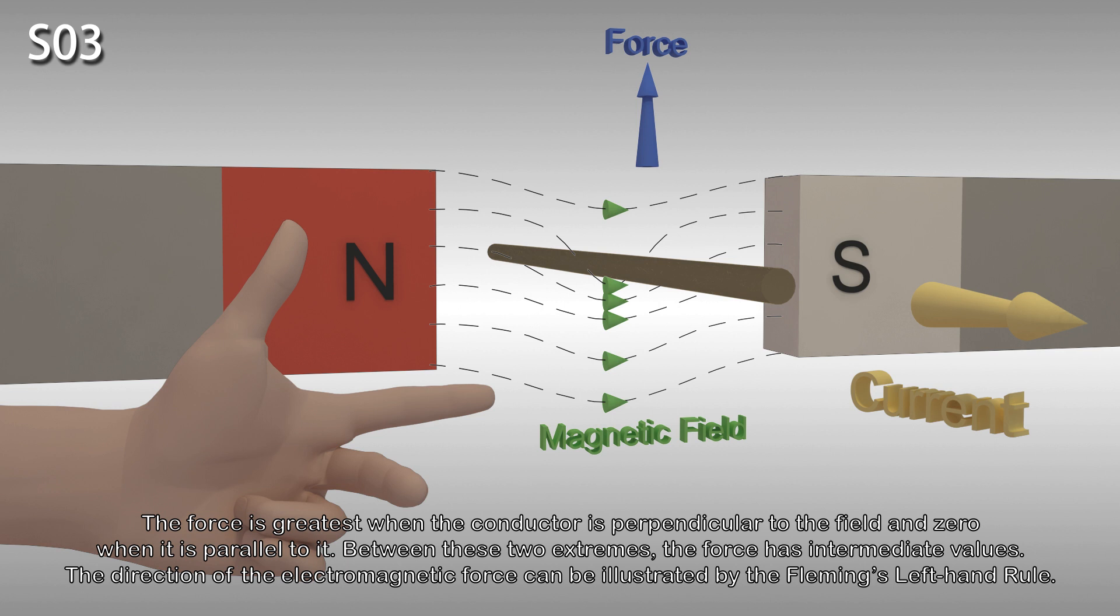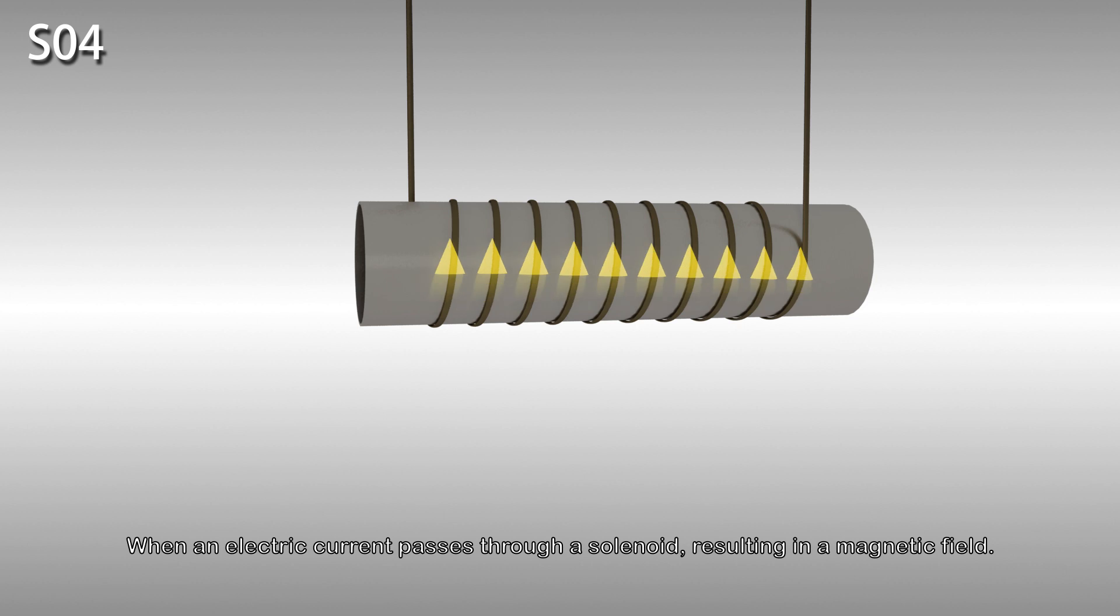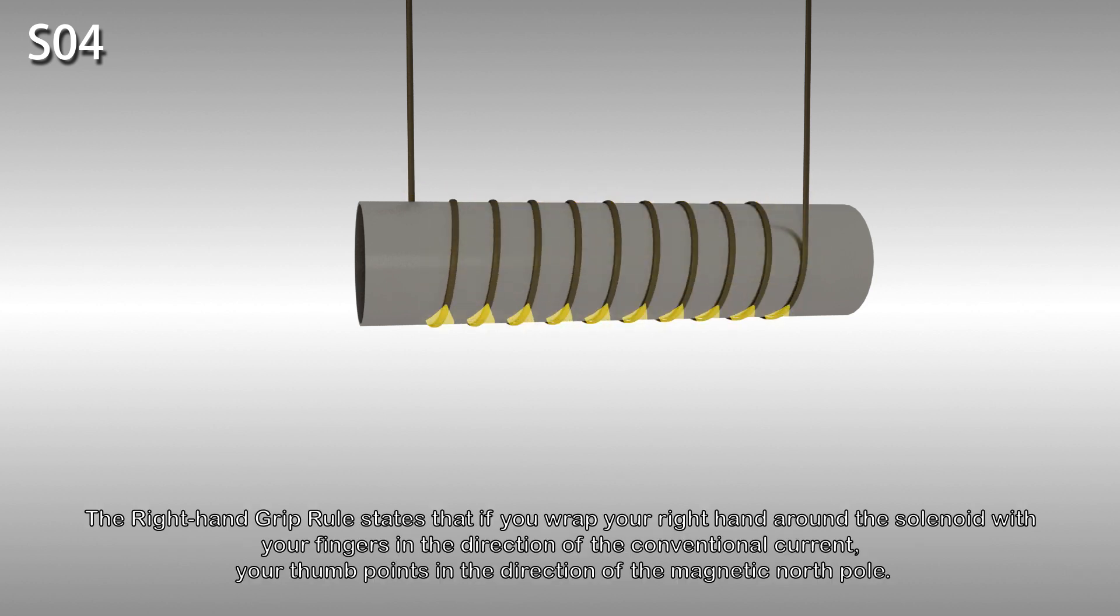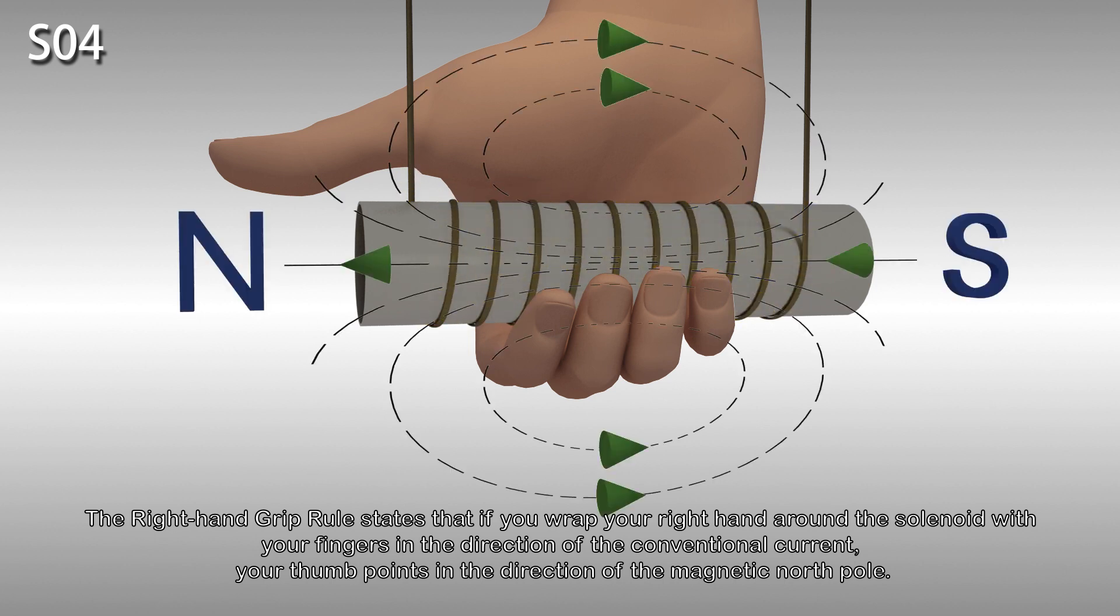The direction of the electromagnetic force can be illustrated by Fleming's left-hand rule. When an electric current passes through a solenoid, it produces a magnetic field. The right-hand grip rule states that if you wrap your right hand around the solenoid with your fingers in the direction of the conventional current, your thumb will point in the direction of the magnetic north pole.